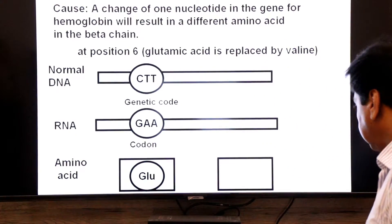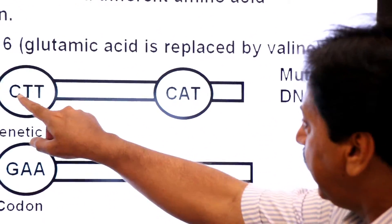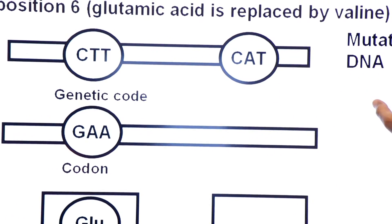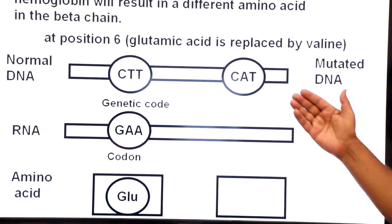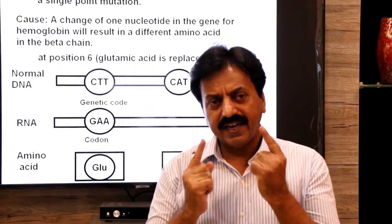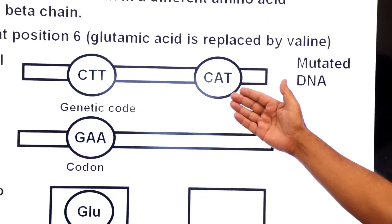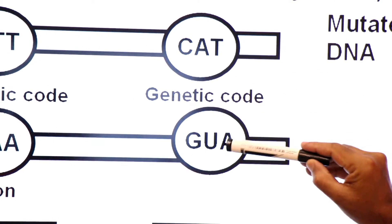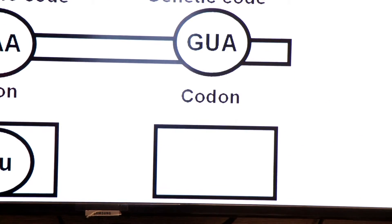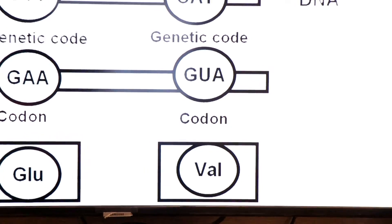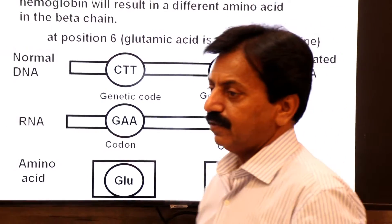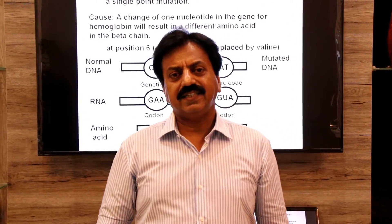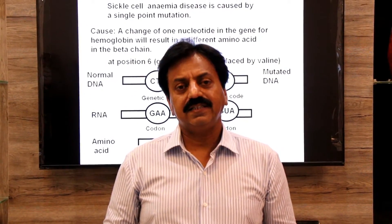Now let's see the point mutation. In the normal sequence, C remains the same and the first T remains the same, but the middle thymine is substituted by adenine — this is the point mutation. The DNA gets mutated. This is called a point mutation because only a single nucleotide changes. When the genetic code changes, the codon changes: C copies as G, A copies as U, and A copies as A, giving the codon GUA. This changed codon translates valine instead of glutamic acid, resulting in an abnormal variant of the beta chain — hemoglobin S — which causes sickle cell anemia.